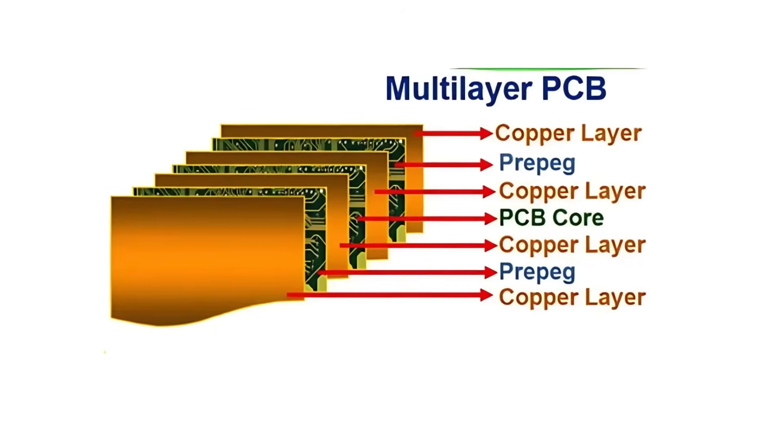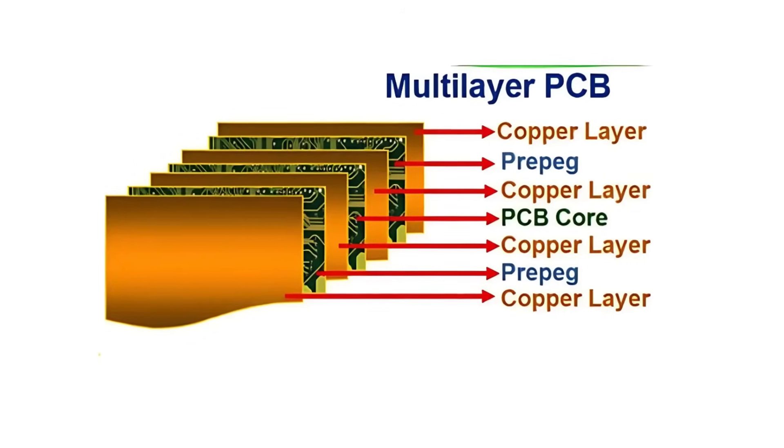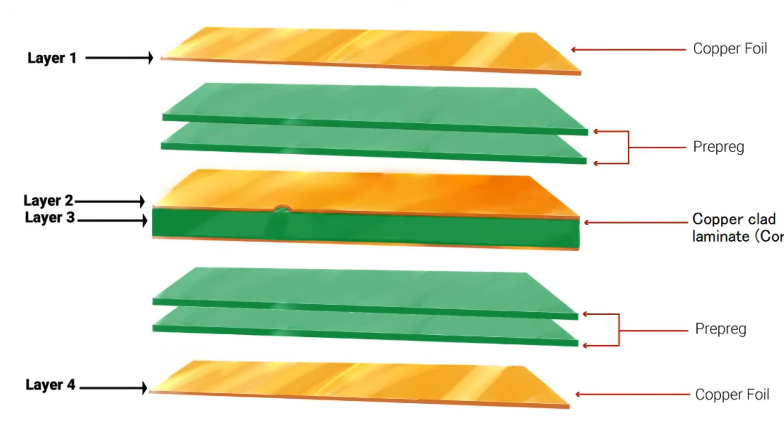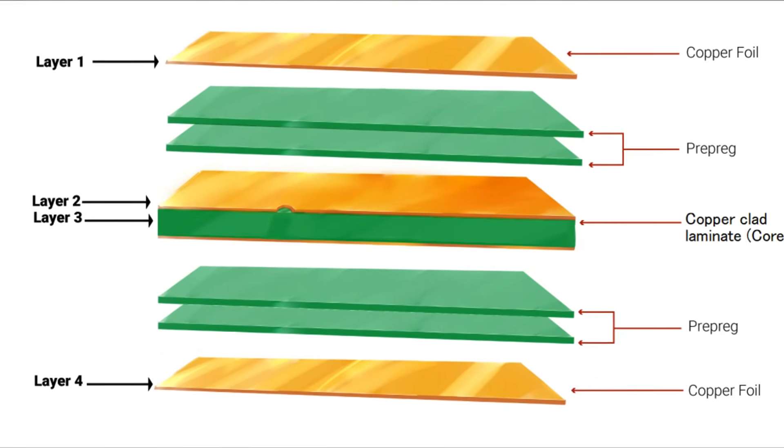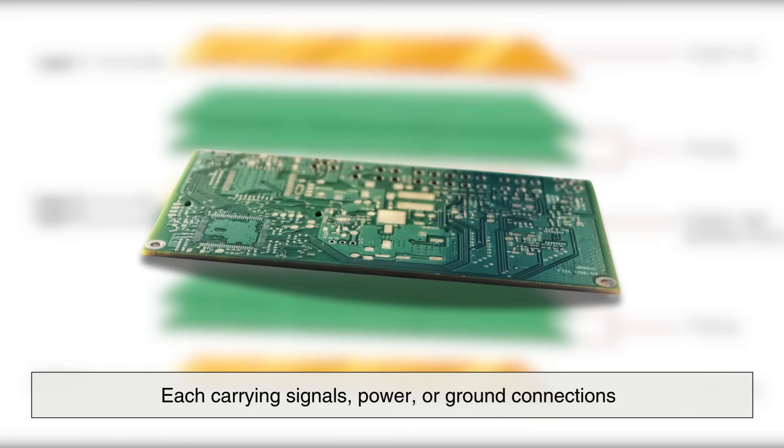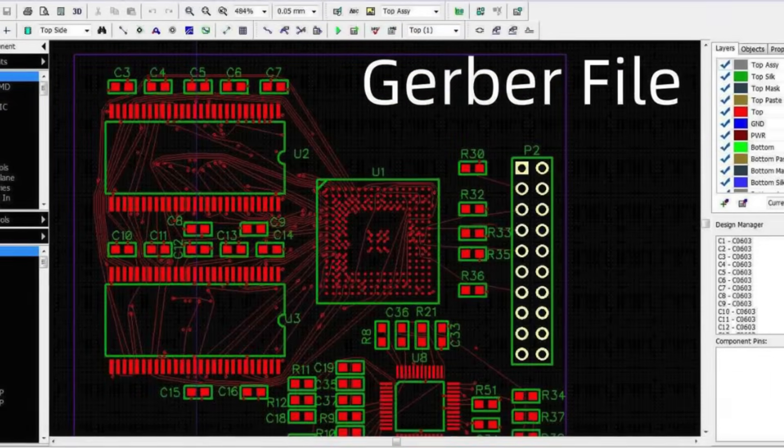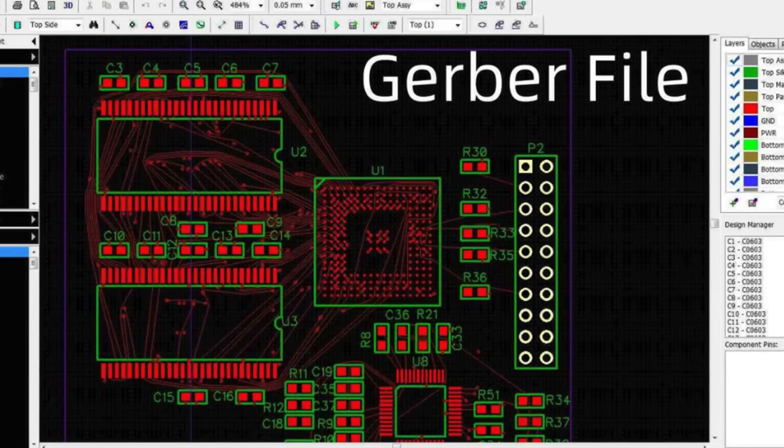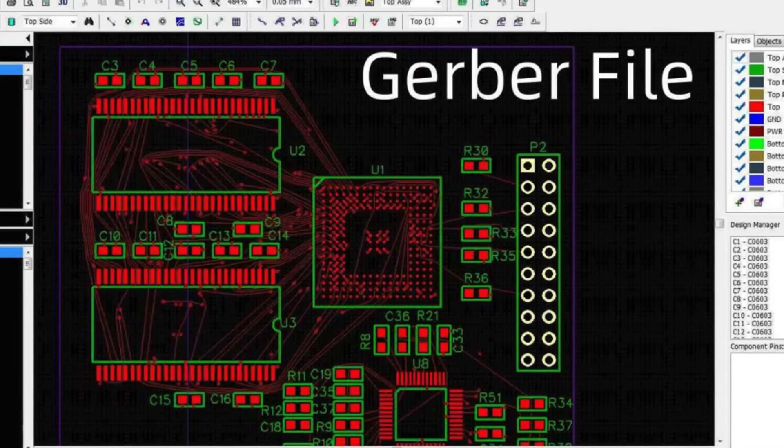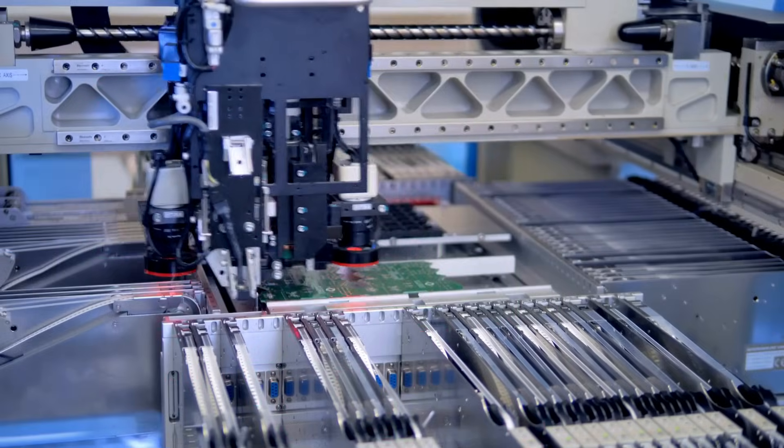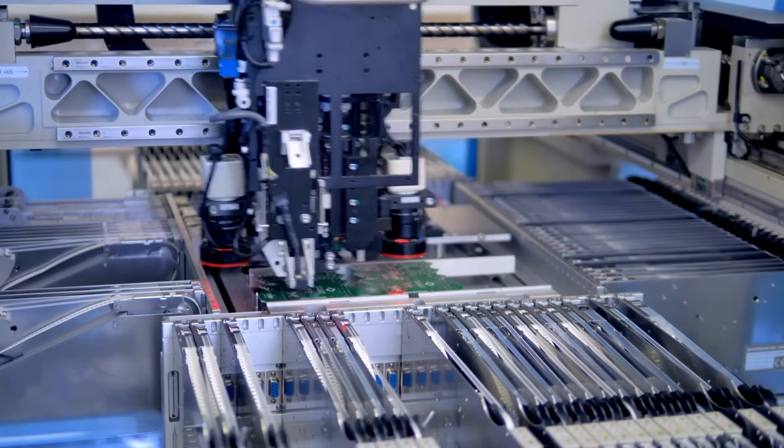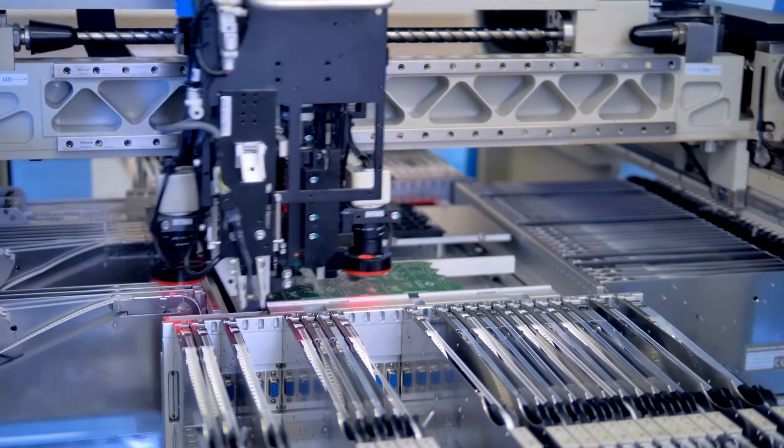Layers are defined. Many PCBs are multi-layered, sometimes with four, six, or even more internal layers, each carrying signals, power, or ground connections. Once the design is complete, it's exported into a format called Gerber files, which are used by PCB manufacturers to start the actual fabrication process.